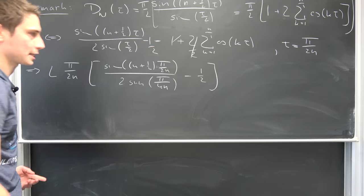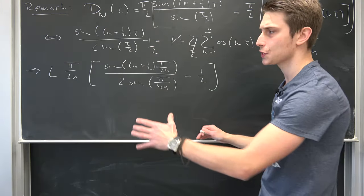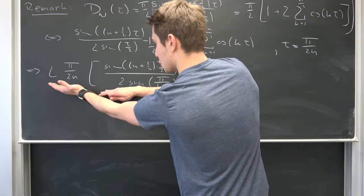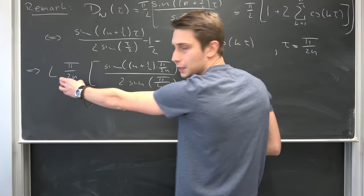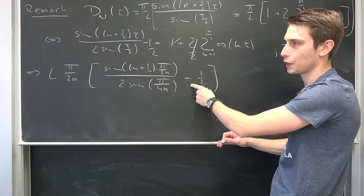This is a lot of stuff to write. I want you guys to notice we can use the limit rules to break this up into two limits, one being this chunk right here and one being the limit as n approaches infinity of pi over 2 times n times minus 1 half.